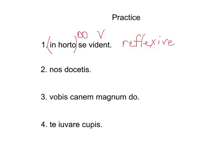Second sentence: 'nos docetis.' Here we have a direct object and a verb. '-tis' is second plural, and 'nos' is first plural. 'Nos' does not refer to the subject — it's personal.